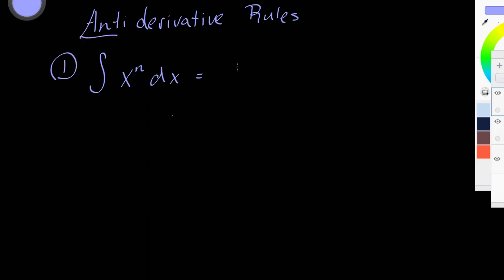When we're taking the anti-derivative, we want to do the opposite. So what we're going to do is we're going to add 1 to the exponent and divide by the new power. And don't forget, we're always going to add c.